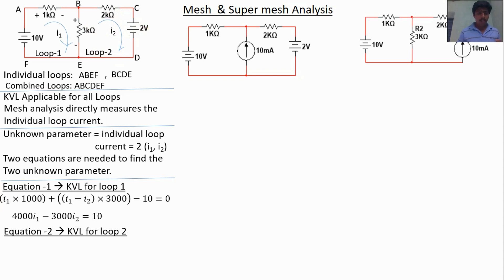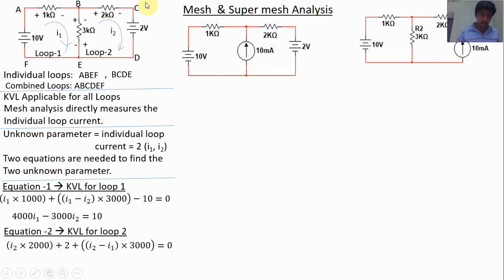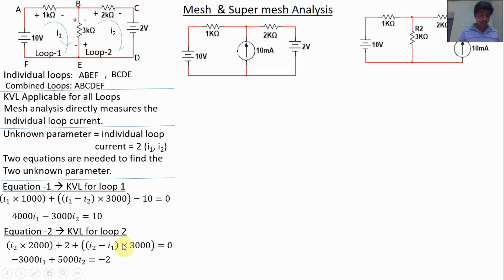For equation 2, apply KVL for loop 2. Mark the polarity in the current direction. The voltage across 2kΩ is I2 × 2000 — positive. The 2V source: current enters plus to minus — positive 2 volts. The shared branch current is I2 minus I1 through 3kΩ. Simplifying: minus 3000·I1 plus 5000·I2 equals minus 2. This is equation 2.